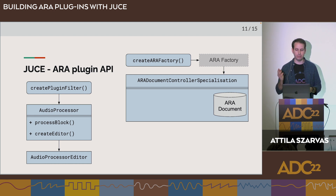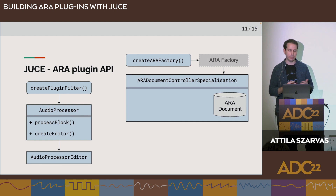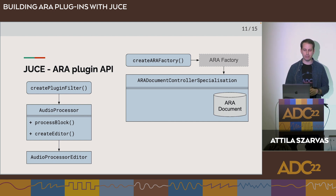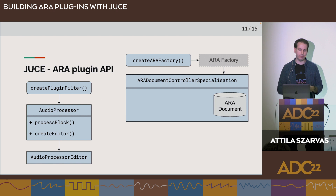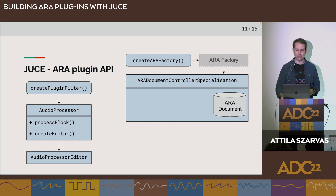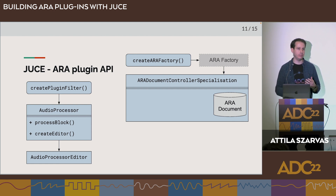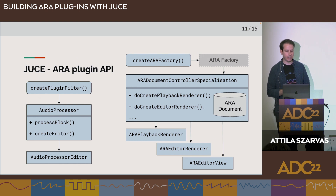You don't have to implement the ARAFactory class yourself — there's a static helper function inside ARADocumentControllerSpecialisation. If you're using a producer template, the create_ARA_factory function is an auto-generated one-liner. For an interactive audiovisual experience, which most ARA plugins will provide, we need more classes: the ARA playback renderer, editor renderer, and editor view.